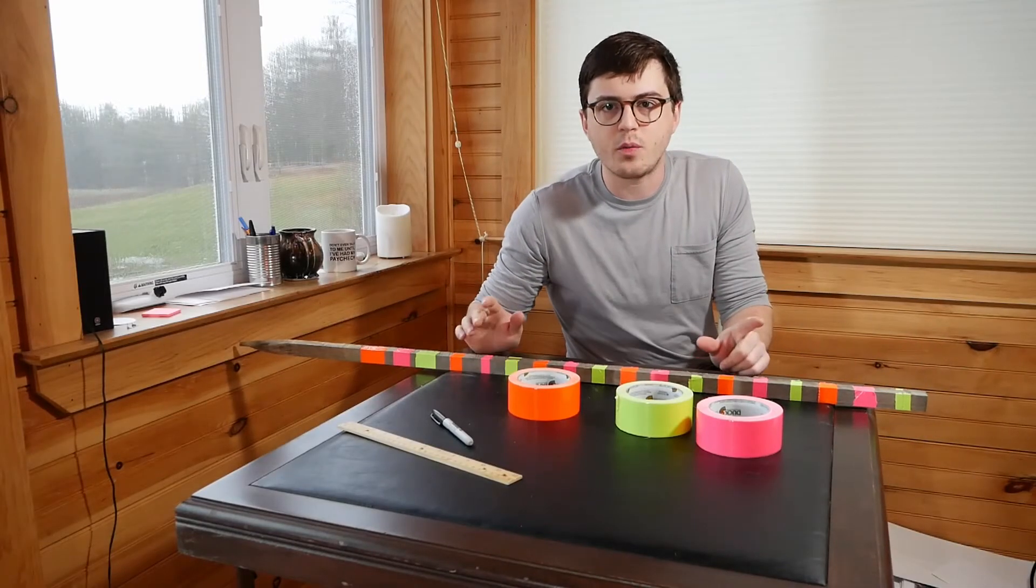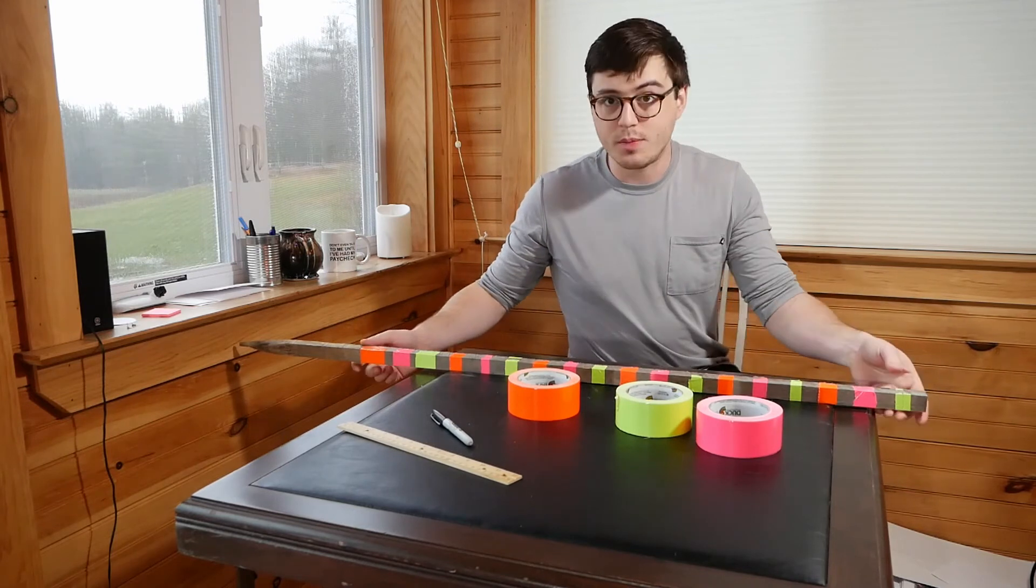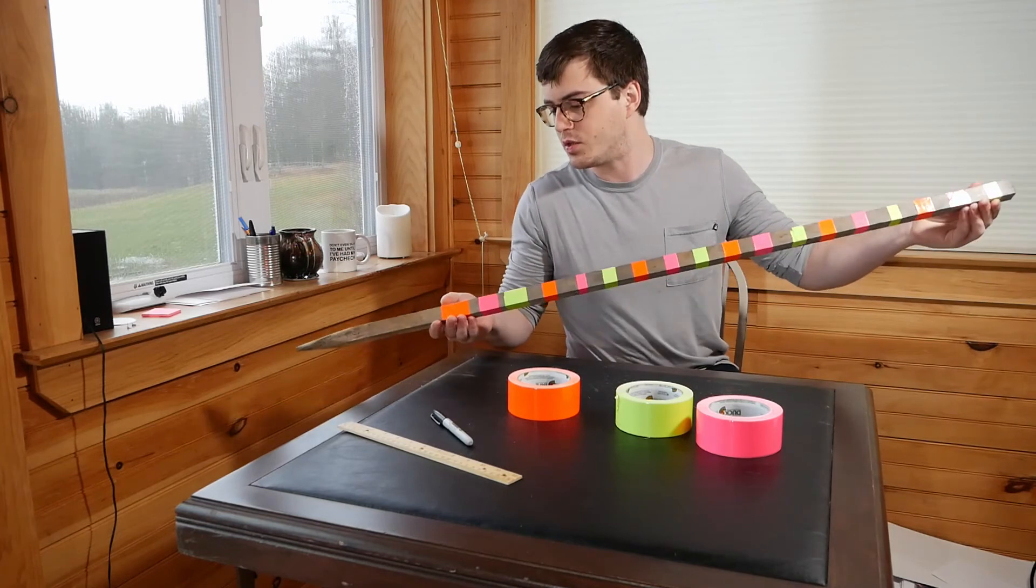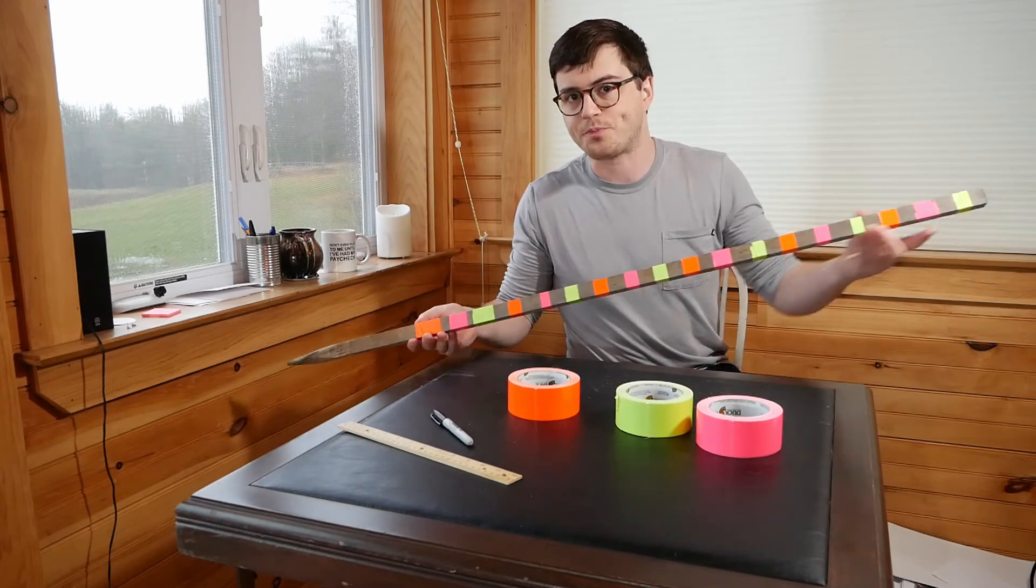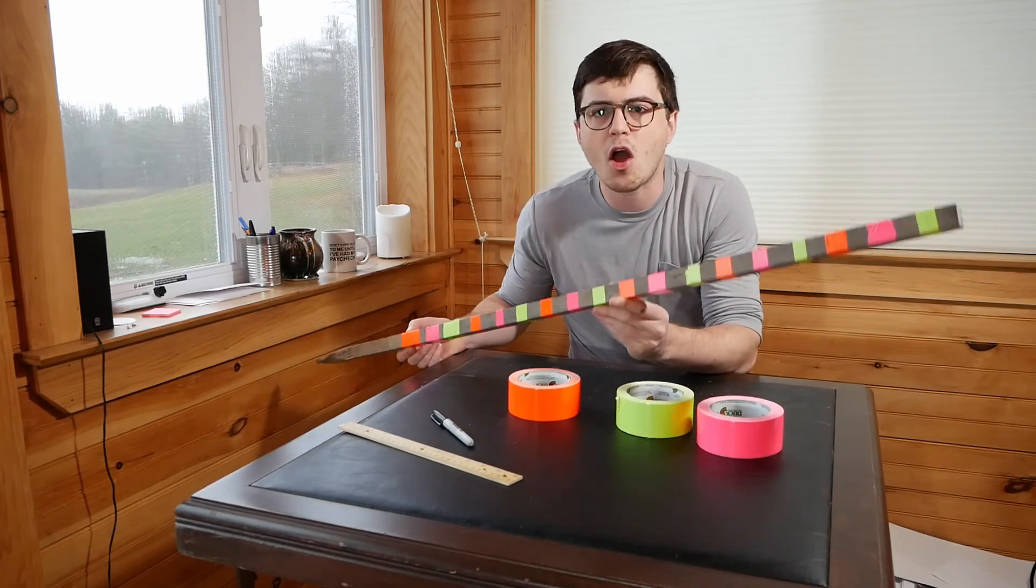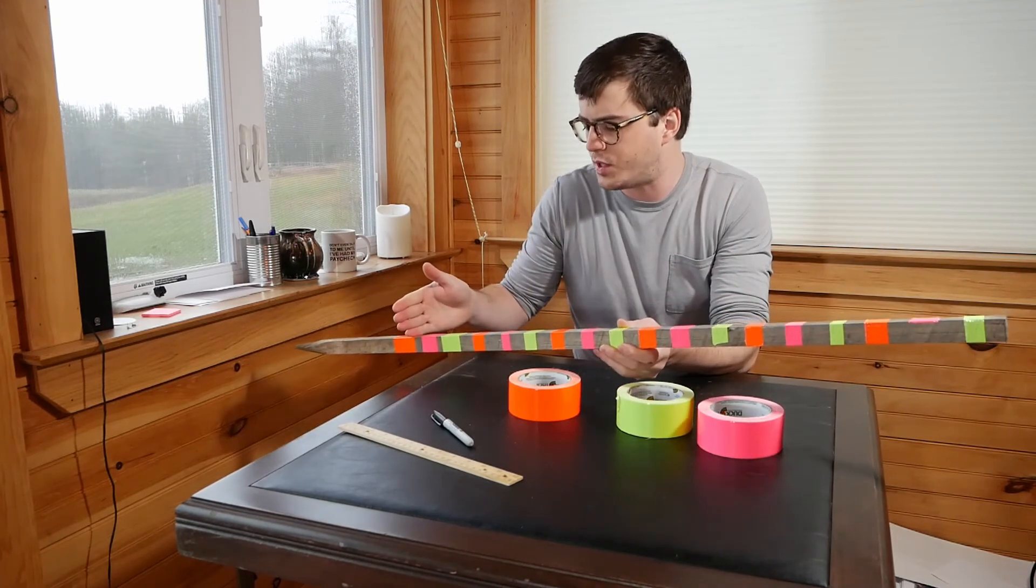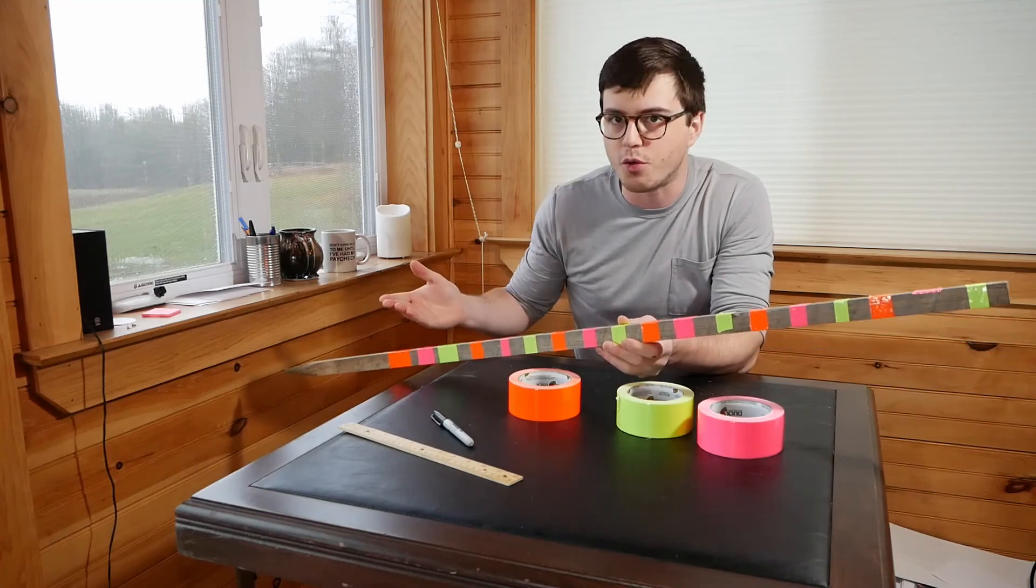Alright, so now that we have our snow gauge all marked out, we're pretty much ready to go. All that's left is to take this outside and put it in the ground so that the zero is at the ground level. Now you might be wondering, how am I possibly going to be able to tell that the snow is only at two inches instead of eight inches? They're both orange.